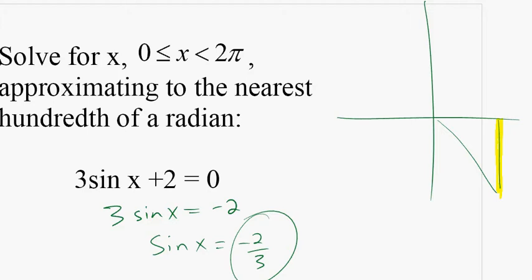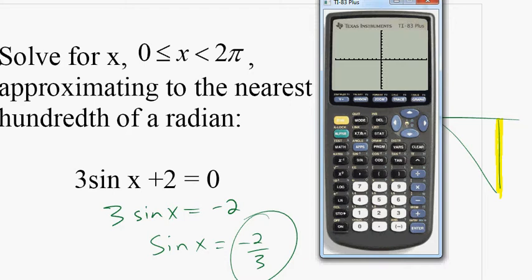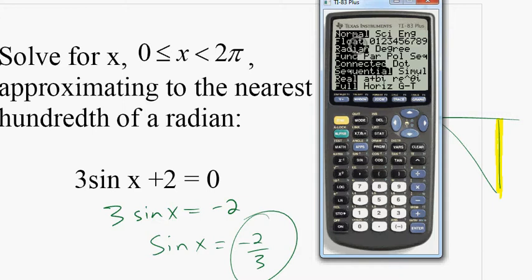Let's actually use the calculator. There's two main ways that you need to be comfortable using the calculator here. One you've probably done before, at least in your geometry class, where you've been given the ratio and you want to find the angle. First off, you might want to check to make sure your mode is in radian and not degree.